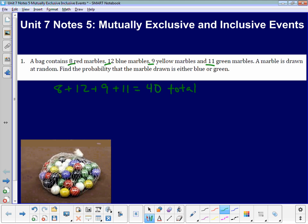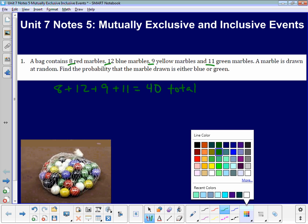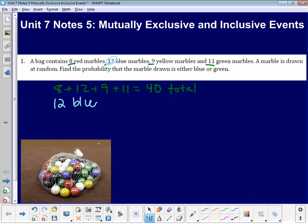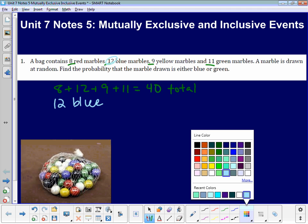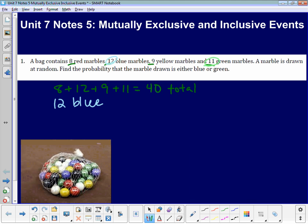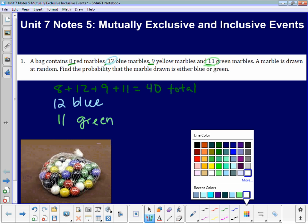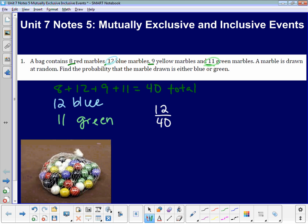The other thing I need to know is how many are blue and how many are green. I have 12 blue and 11 green. So the probability of getting a blue is going to be 12 out of 40. The probability of getting green is 11 out of 40. If I put those together, that's 23 out of 40. We could reduce this fraction, but there's nothing we can reduce 23 and 40 by, so it stays that way.